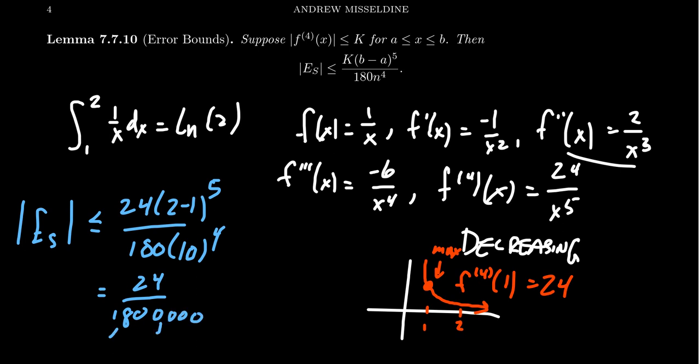So we have 24 over 1.8 million, if I got the number of zeros there correctly. And so that is going to shrink down. I mean, as a fraction, you can write this as 1 over 75,000. But really, just throw this in a calculator. We don't need a simplified fraction. We want a decimal. We're going to get 0.00013. That's what we get right there. That's pretty small. That's accurate to four decimal places, almost a fifth decimal place there.